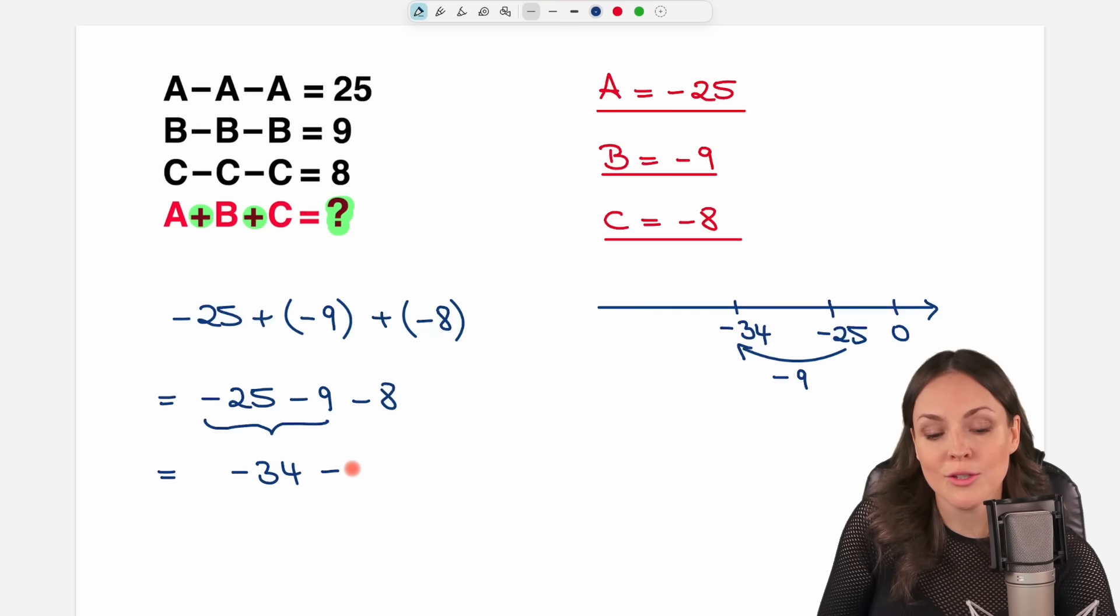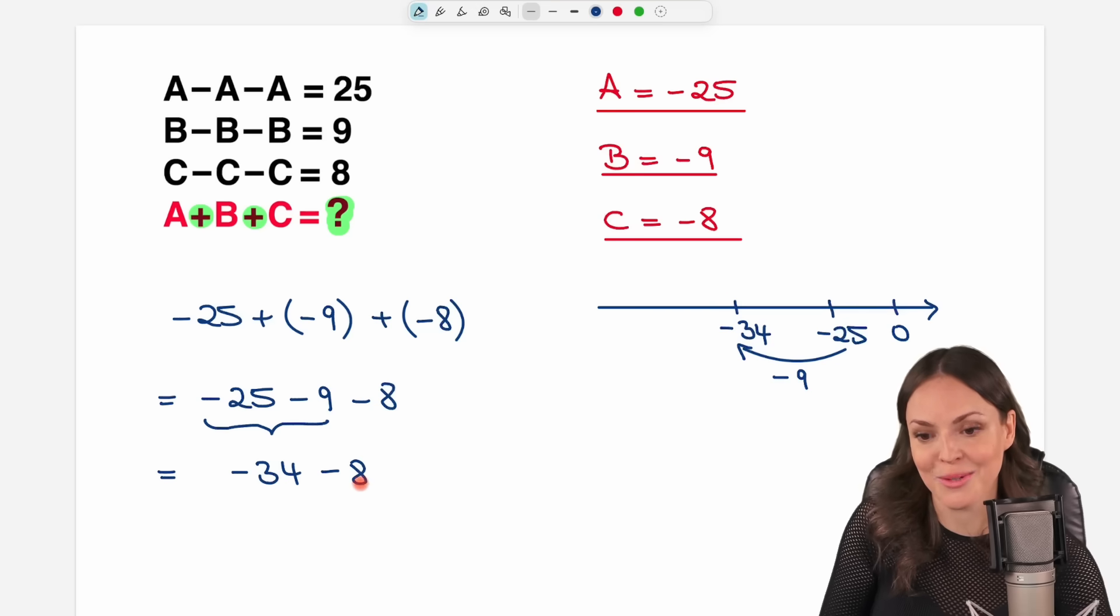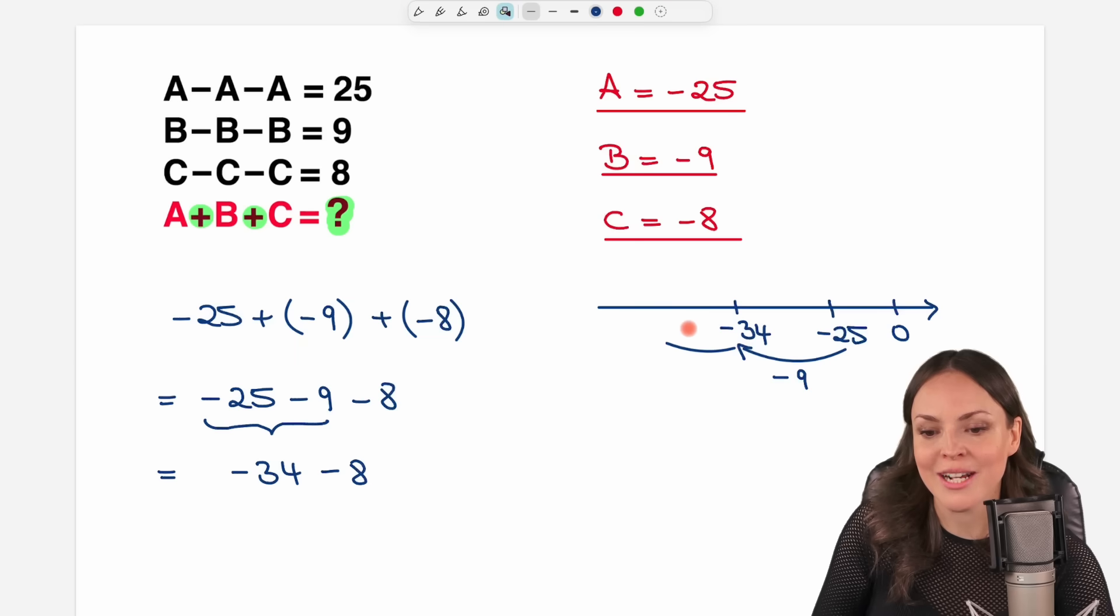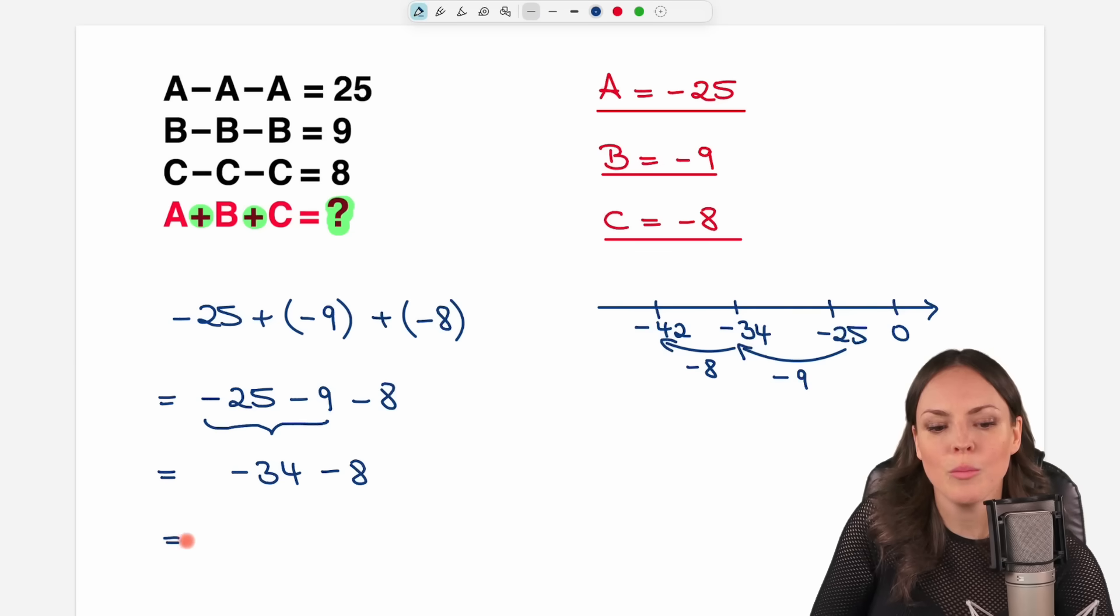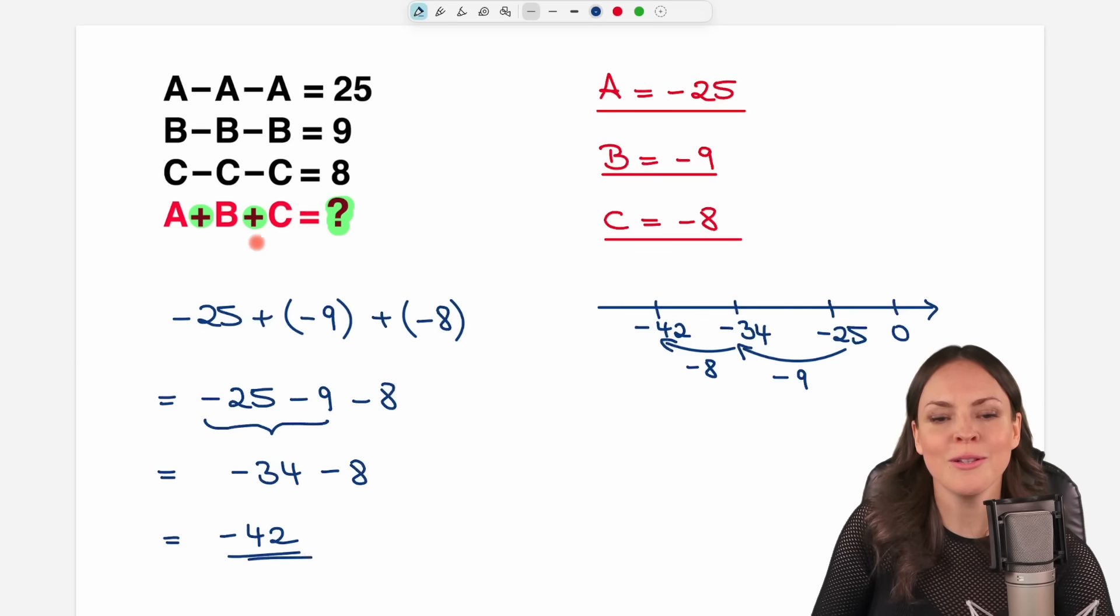Don't forget to subtract the other 8 as well. So we want to subtract 8 more here. So we're going to be in the negative area. Negative 34 minus 8 more steps is going to be negative 42. What a beautiful result here for our little problem.